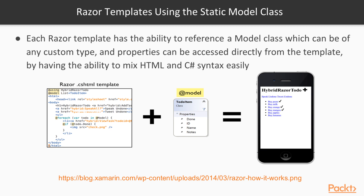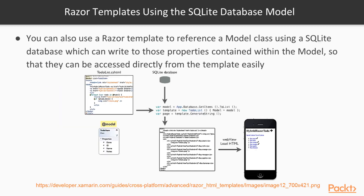Each Razor template has the ability to reference a model class using the @model directive, and this can be of any custom type. Each of the properties contained within the model class are easily accessible within the template because you can mix HTML and JavaScript syntax very easily. As you can see in the picture here, you have your Razor template prefixed with a .cshtml extension, then your static model class with a series of properties, and to the right the rendered Razor HTML page displayed in the web view.